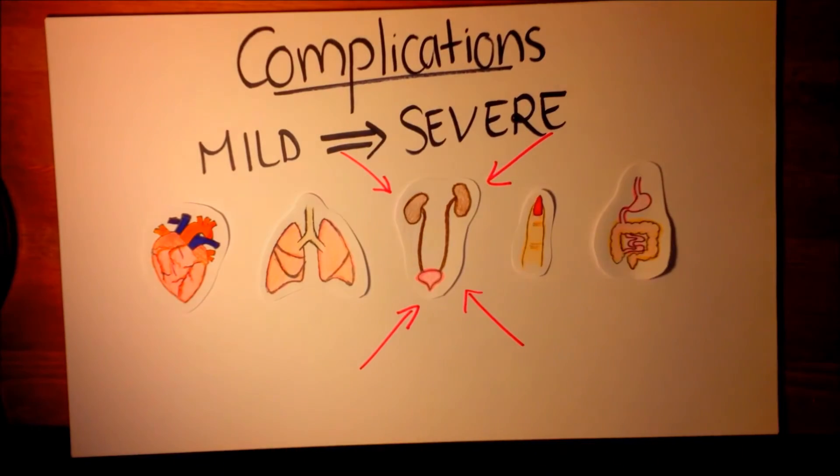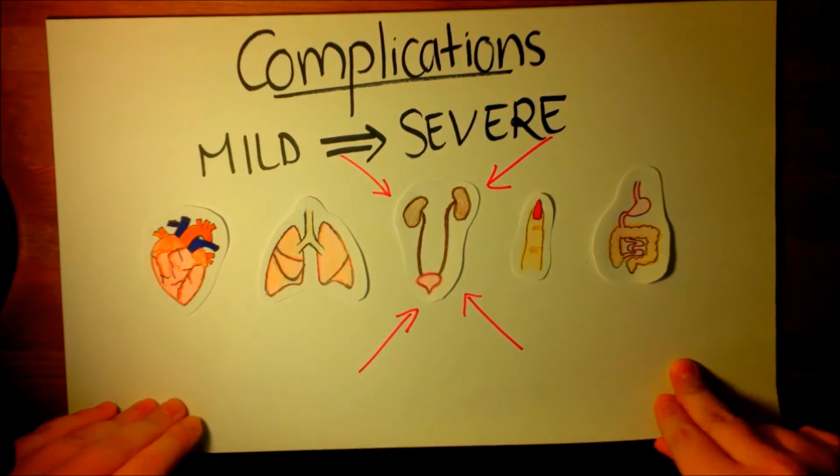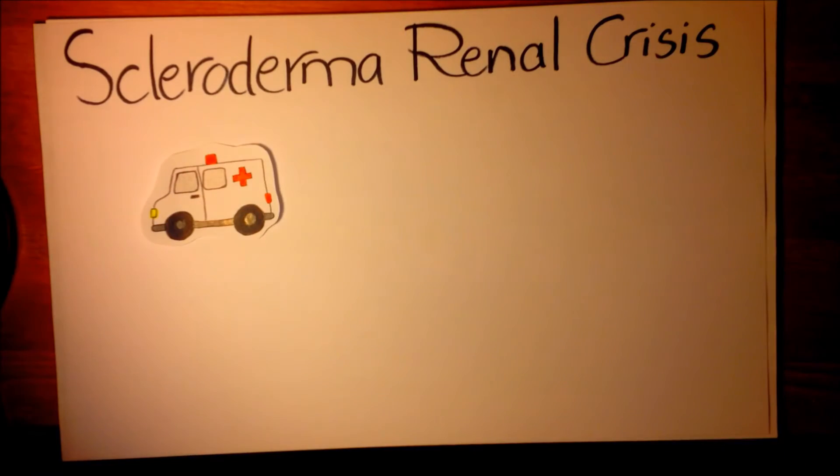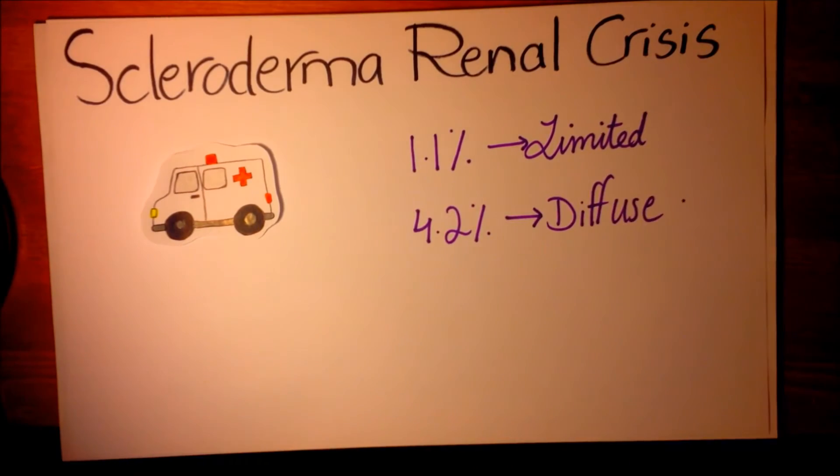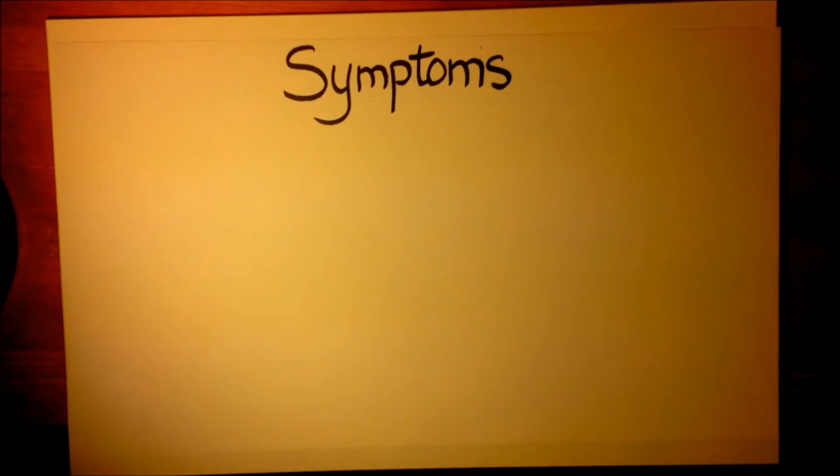The main focus of this video is one of the most serious complications that can occur in the kidney and is known as scleroderma renal crisis. Recent estimates suggest around 1.1 percent of patients with limited scleroderma and 4.2 percent of those with diffuse scleroderma develop this complication.